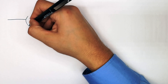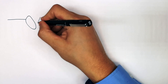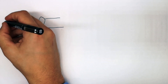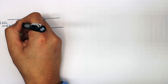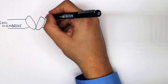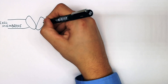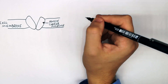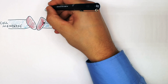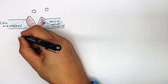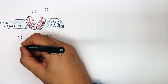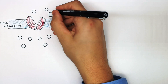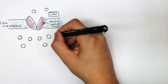Here I'm drawing the protein carrier molecule embedded in the cell membrane. Embedded in the cell membrane is a protein carrier molecule. Particles using active transport have to go against the concentration gradient, from a low to high concentration.